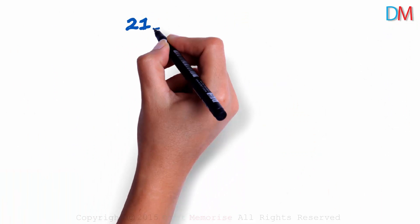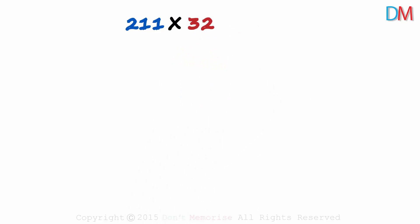The next problem is a bit tricky. 211 multiplied by 32. We have a three digit number here. Does anything change? Well, not much. The approach is the same but the number of zones change.